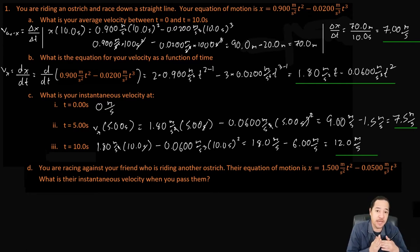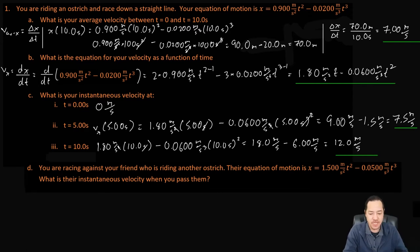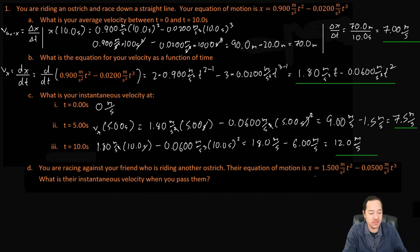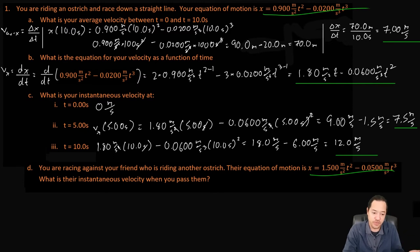After the start, your friend's ostrich takes off a little bit faster, but then you catch up. We need to figure out what time you catch up. When you catch up, both x values will be the same. So we set the two equations equal to each other to find the time when the positions are equal.